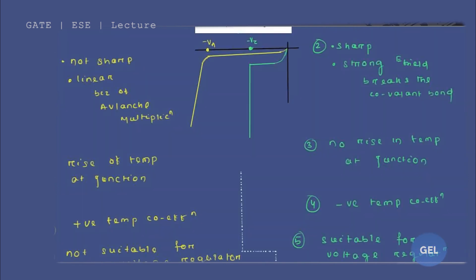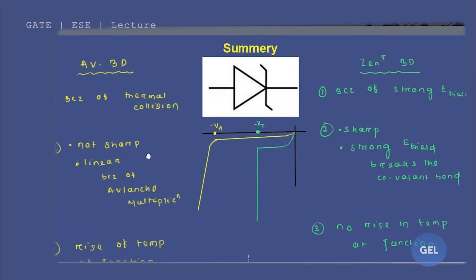Now let's cover the summary comparison of avalanche and Zener breakdown. In Zener breakdown, the breakdown happens sharply and instantaneously — the current rises very steeply. But in avalanche breakdown, it happens more linearly, because avalanche multiplication builds up gradually. That is why the graph for avalanche breakdown is more linear, while Zener breakdown has a sharper characteristic curve due to the strong electric field breaking covalent bonds directly.